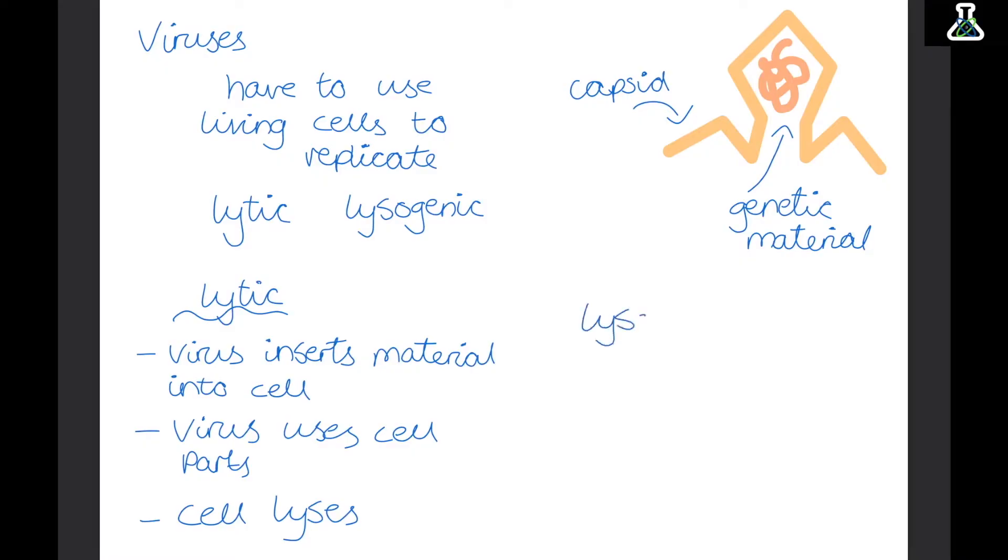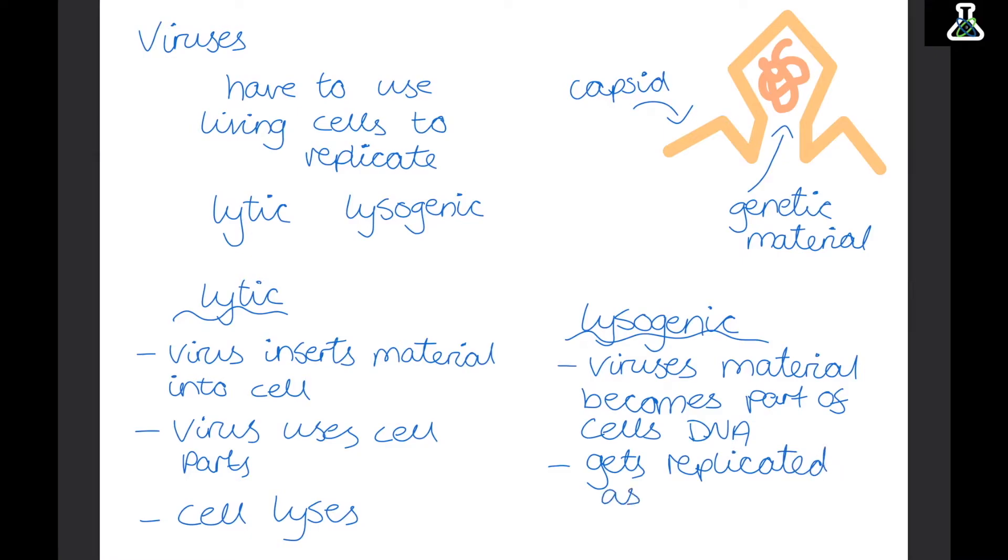Now the other pathway is the lysogenic pathway. Now the virus still inserts its genetic material into the cell. But this time it's going to become a part of the cell's DNA. So instead of using the cell to make new viruses, its genetic material hides within the cell's DNA. Now the virus genetic material then gets replicated as the cell naturally divides. Now this keeps happening over and over until a trigger sends the virus into the lytic cycle. So it keeps on dividing with the cell. And then it will begin using the cell's parts to create new viruses.